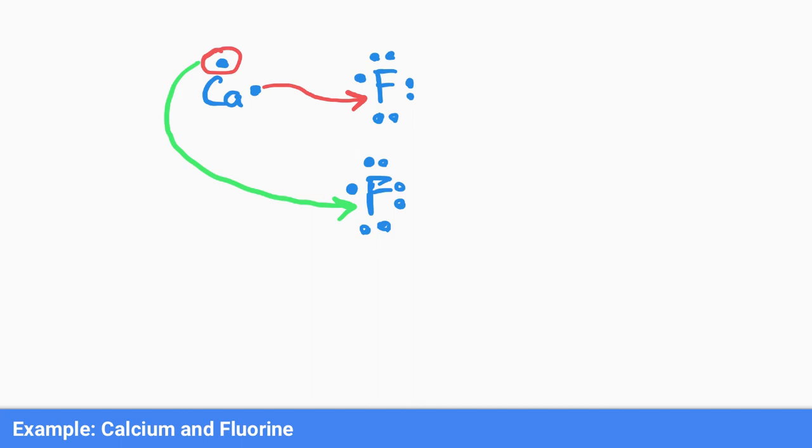Then we want to show our overall final state. We have calcium that's lost two electrons, it is now a two plus charge. We can show the fluorines a couple of different ways. We could show them separately, so we have one fluorine here with a negative charge, and maybe we put the other one over here just to stress that we would have alternating negative and positive charges.